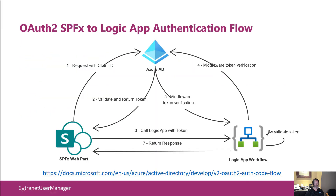Under the hood in that OAuth conversation: when somebody hits submit on the web part and we know we're going to call the Logic App, SharePoint Framework first goes to Azure AD, figures out who's signed in hitting this web part right now, embeds that in the token, and passes it across to the Logic App as the header of the POST. The nice thing is we don't have to worry about the actual validation — the middleware in Logic Apps, Microsoft takes care of that. It passes the token back to Azure AD to verify it's a properly signed token that hasn't been intercepted or tampered with.